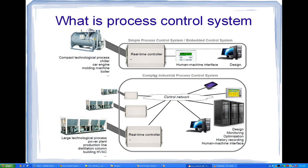In the case of a complex industrial process control system, the situation is slightly different. We can have several real-time controllers and a control network that interconnects the real-time controllers with different kinds of displaying, data storage, or designing devices. On one side we have real-time control; on the other side we have user displays, servers, and PCs. This side of the control network handles designing, monitoring, optimization of process, history recording, and human-machine interface.